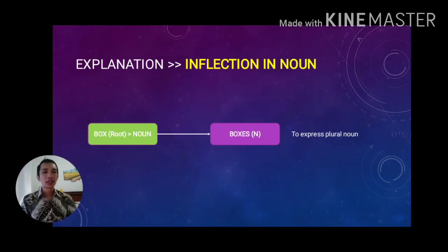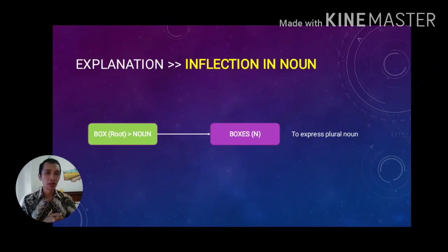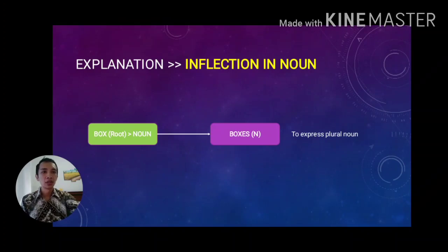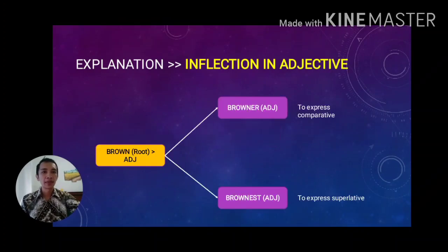The next process of inflection happens in nouns. When we have the noun 'box' as a root and want to make it plural, we add '-es' at the end, changing 'box' into 'boxes.' The class of word does not change — 'box' and 'boxes' are still both nouns. There is no change in class of word.